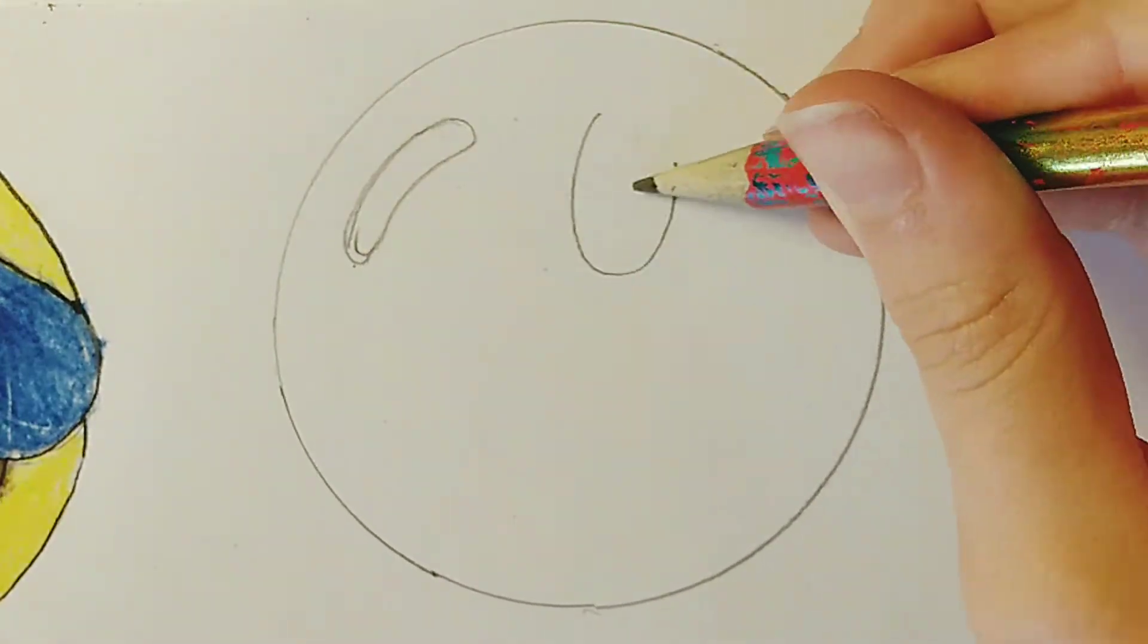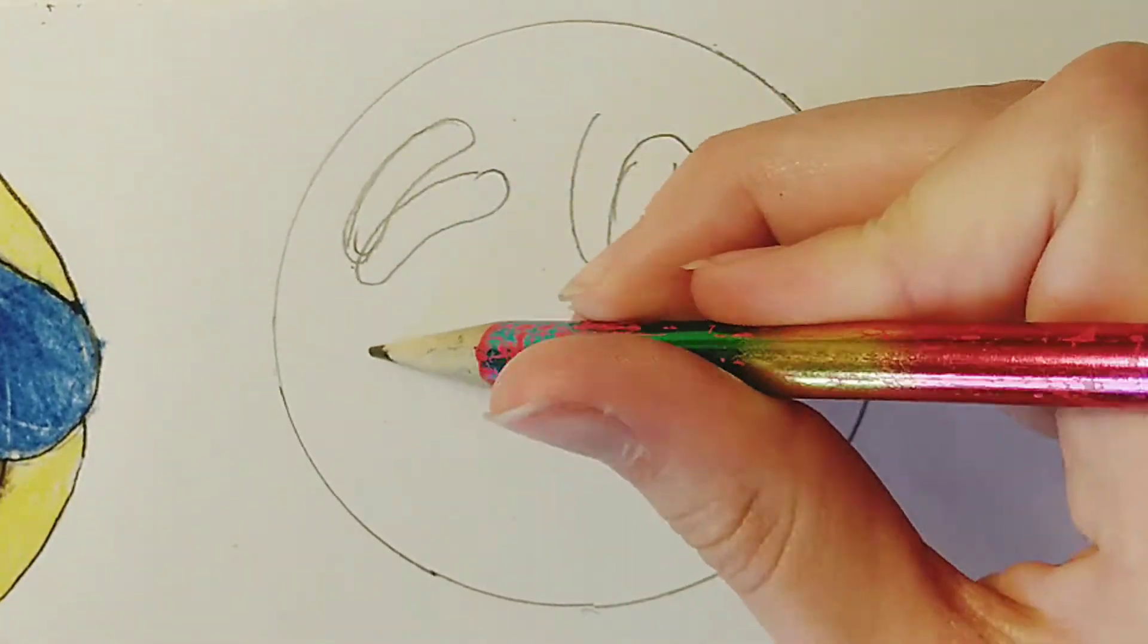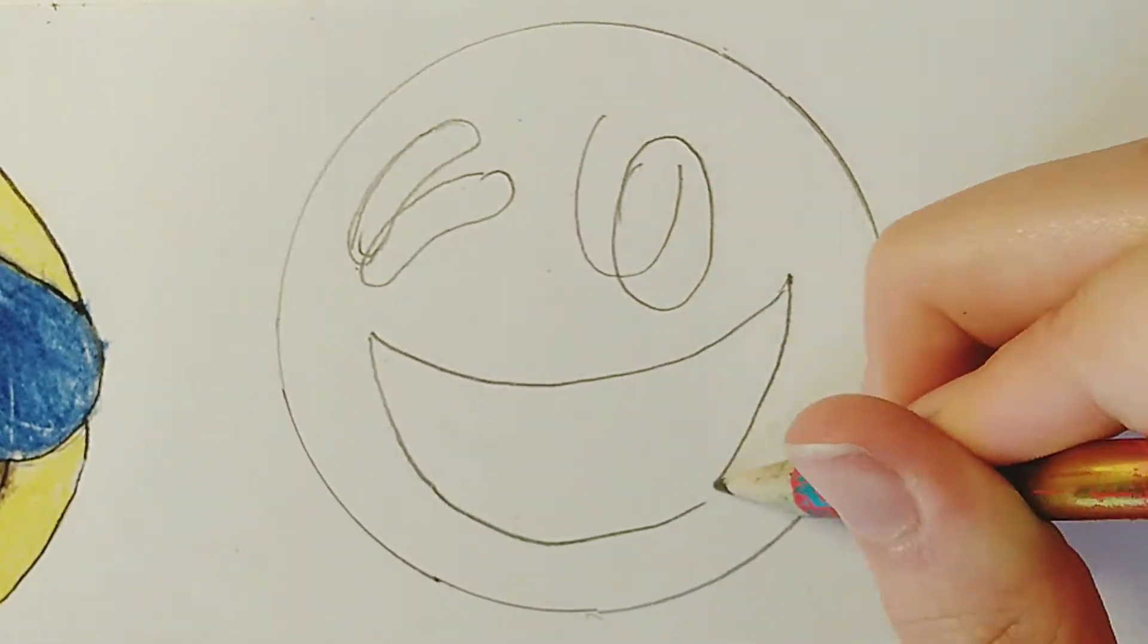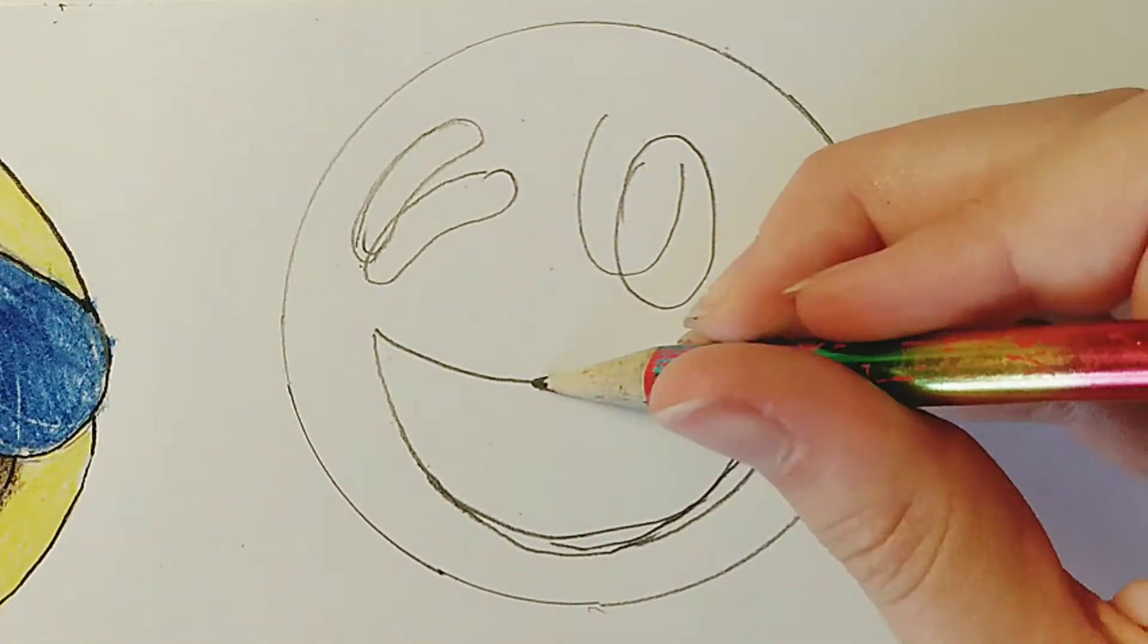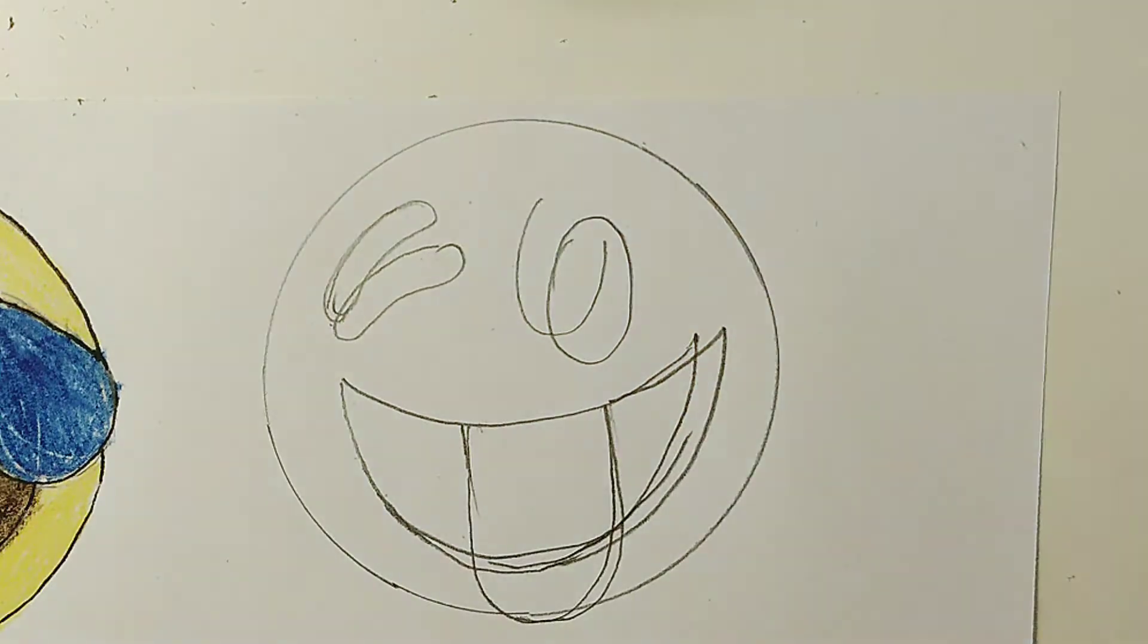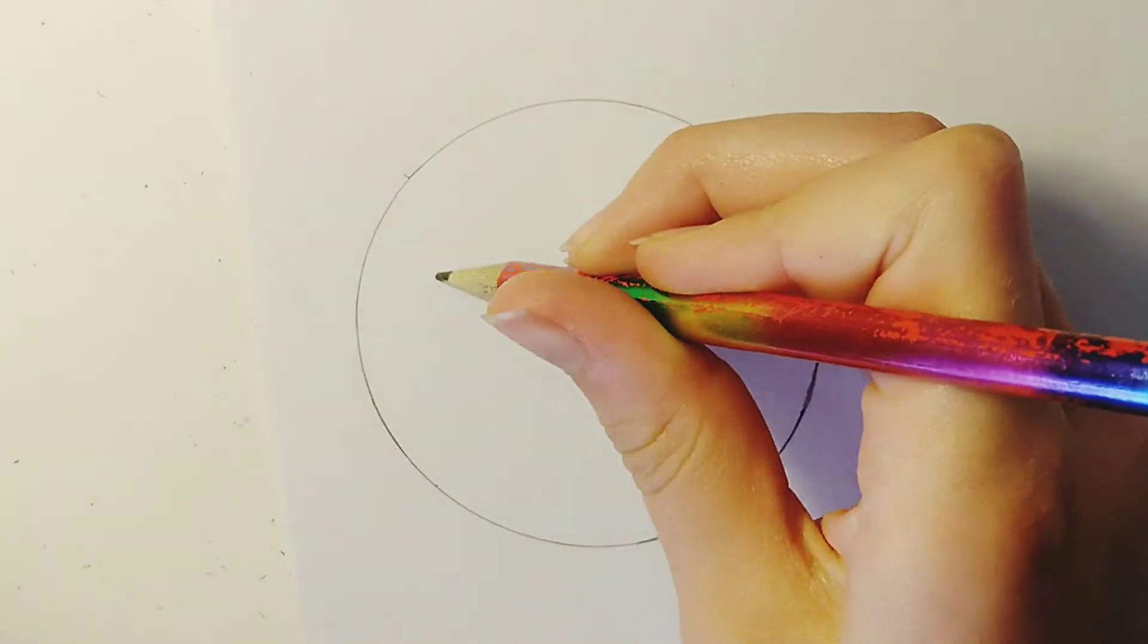So the next one is going to be winking with its tongue out. So the winking eye needs to be quite low down and the other eye is just an oval. And then we're doing the same wide mouth again and then just the tongue sticking out.